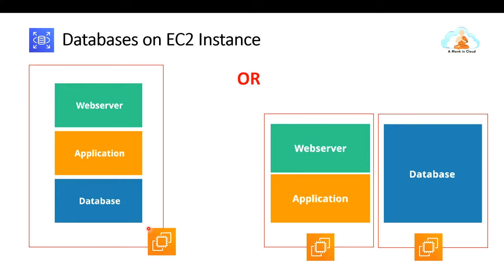In the industry, people do not recommend putting all three components on one EC2 instance. If that instance crashes, you lose the database, application, and web server all at once — it carries great risk. This is fine for testing, but not for production. A better option is to run the application and web server on one EC2 instance and the database on another EC2 instance, which reduces some of the risk.